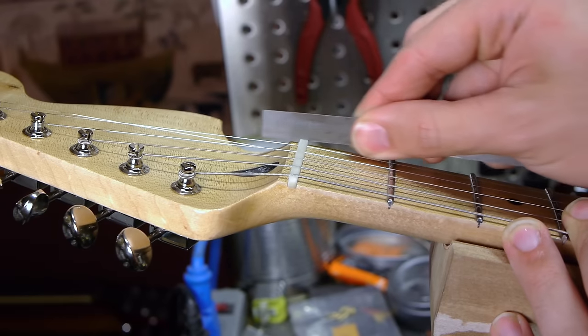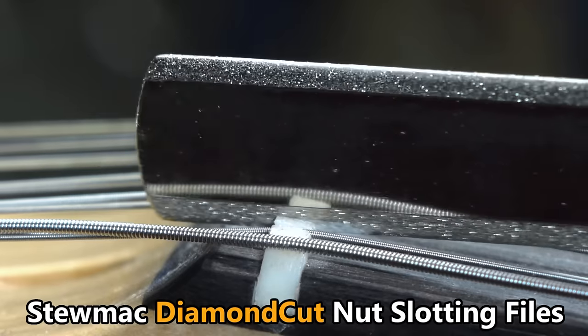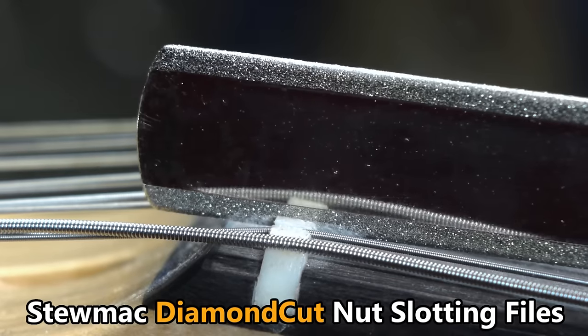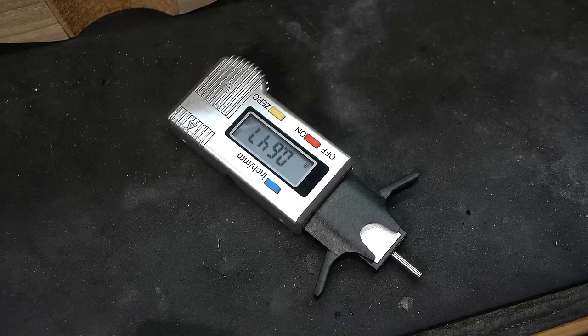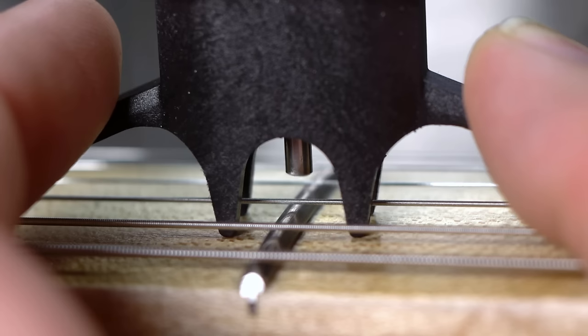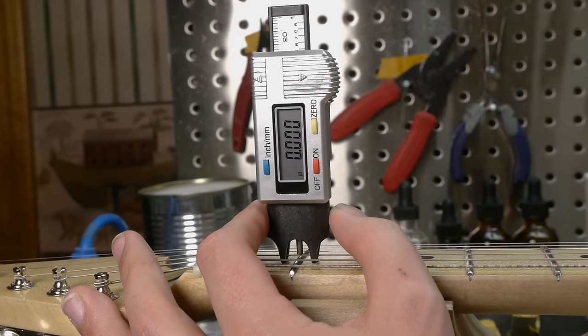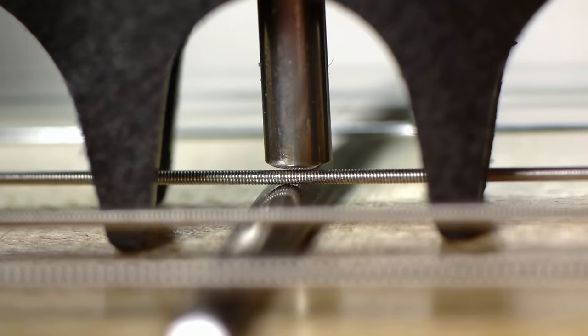With the neck relief and the string action set, you're ready to remove the capo and cut the nut slots to the perfect depth. For years, I did this by eye, but in recent years, I've been using a digital action gauge exclusively for setting nut slot depth. It has a free-falling probe that rests on top of the string without lowering it, so you can zero the meter out, then press the string down to the fret to find the exact action in thousandths of an inch.